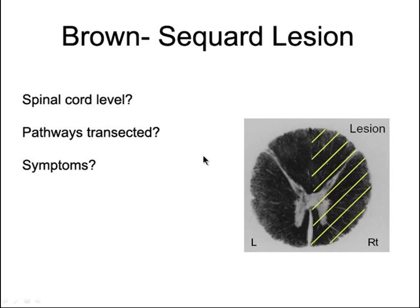Another condition is a Brown-Séquard lesion, which is basically a functional hemisection of the spinal cord. This could be caused by tumor, stroke, a car accident, or twisting of the spinal column — effectively cutting half the spinal cord. Key questions include: what spinal cord level is involved, what pathways are transected, and what are the symptoms?